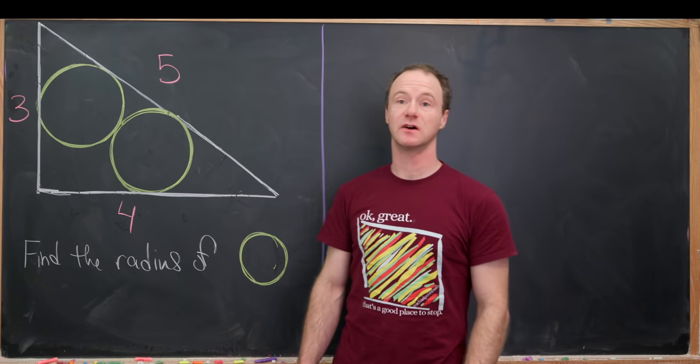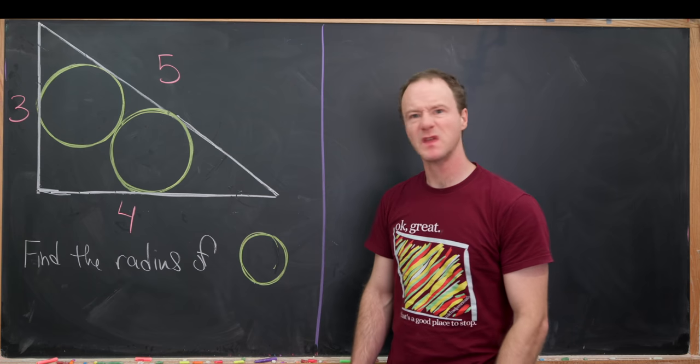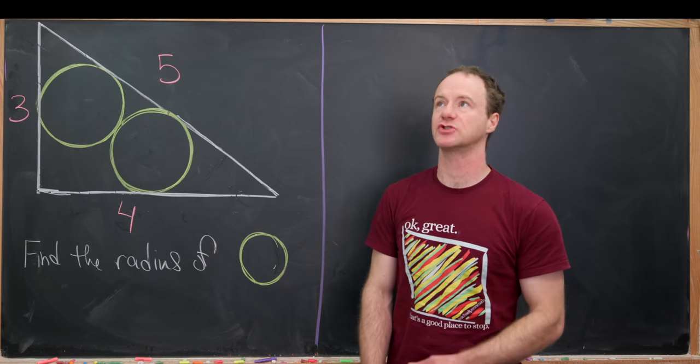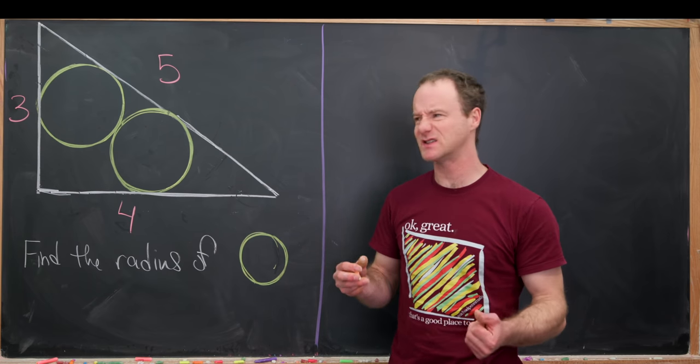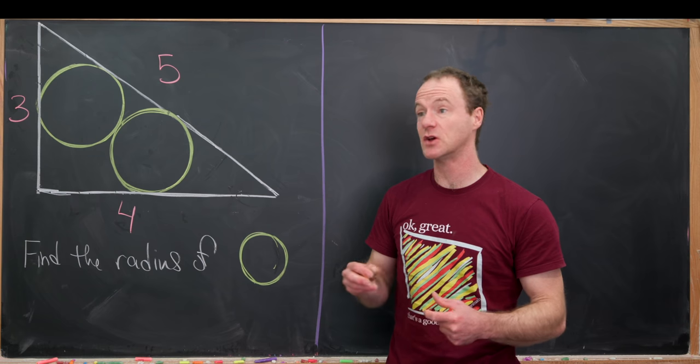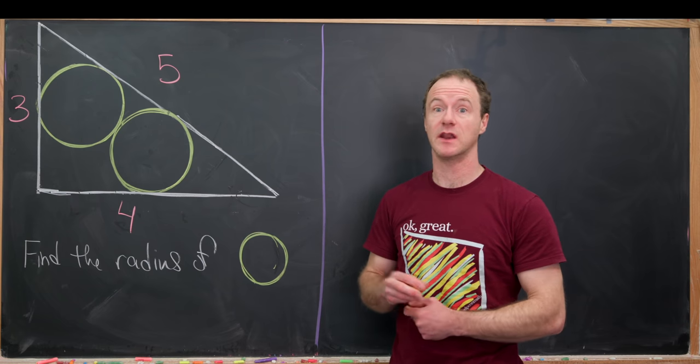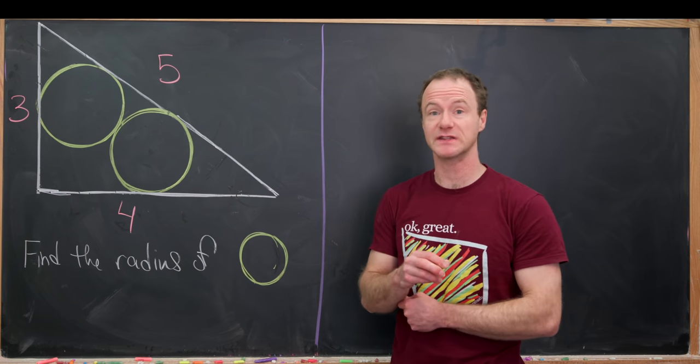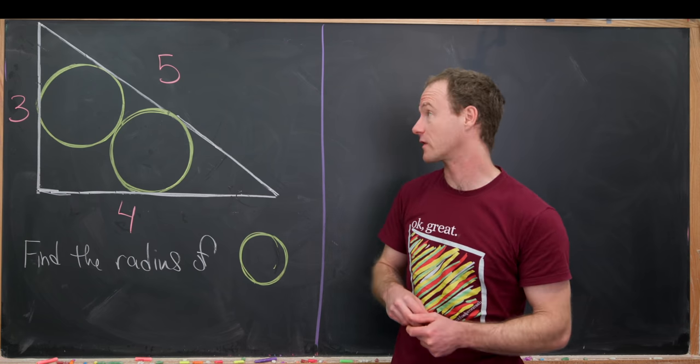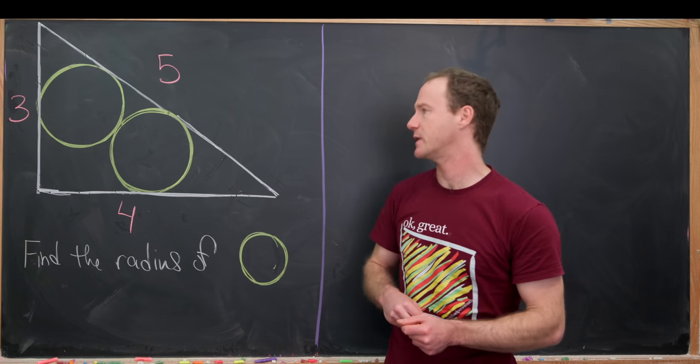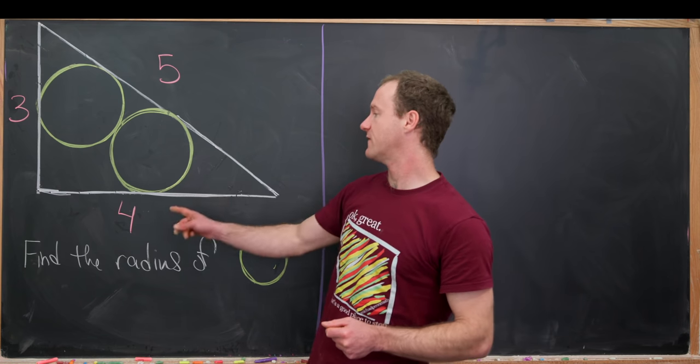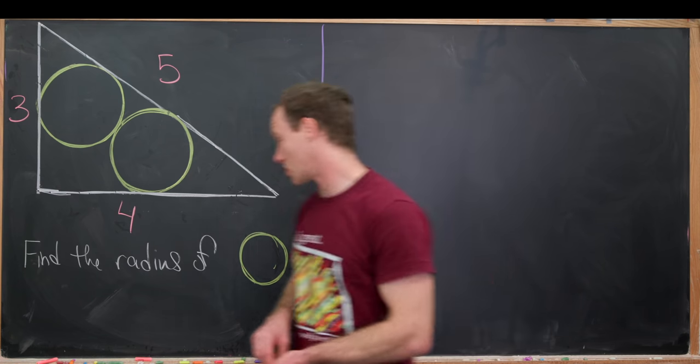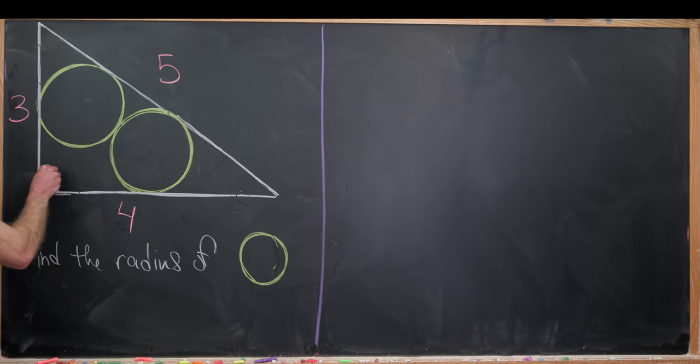Today I've got a nice classical style Japanese geometry problem, and what I mean by a classical Japanese geometry problem is this is the type of problem that is well known to be found on Japanese woodblock prints from the 1800s and earlier. So let's see what we have here. We have a 3-4-5 right triangle, so let's note that that's a right triangle.